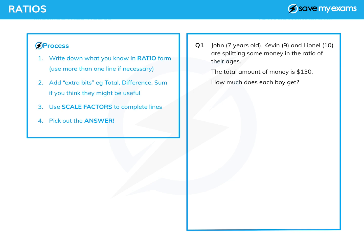The process we're going to use is more of a thought process than an actual process. First, we write down what we know in ratio form — the classic thing with colons in between. We might need more than one line, sometimes three. Once you've written down what you know, it's a good idea to add extra things like the total, the difference, or the sum of pairs of the ratios. Then we use scale factors to complete the lines, and the key thing is knowing roughly where we're heading and picking out the answer.